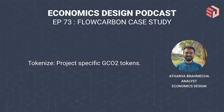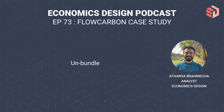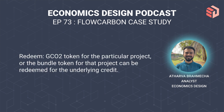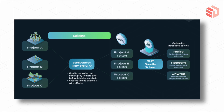The types of actions that can be done on the protocol using your tokens are: tokenize, which creates project-specific GCO2 tokens; bundling, where GCO2 tokens with similar attributes and standards are bundled together; unbundling, which reverses that to regain access to specific GCO2 tokens; redemption, which means de-tokenizing your credit; and retirement, which is when a credit is retired, it cannot be put back into the market, and the corresponding metric tons of carbon can count as an offset for your factory or project.